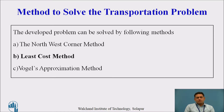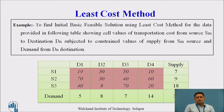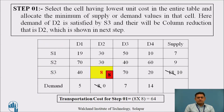The transportation problem can be solved by three methods. In today's session, we will use the least cost method. The name itself says: select the cell with the overall least or lowest unit cost in the entire table. In the current problem, the cell with cost 8, highlighted in yellow, is the least cost, lying at destination D2 and source S3.